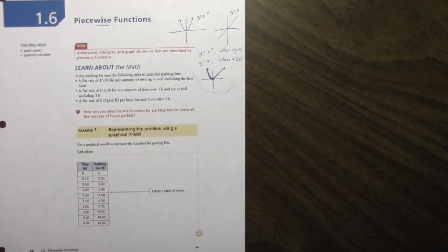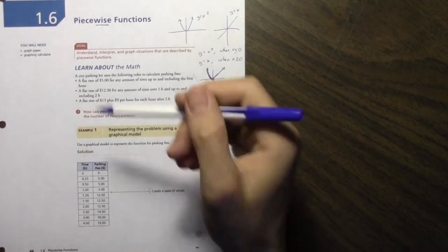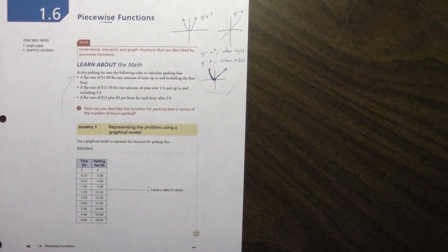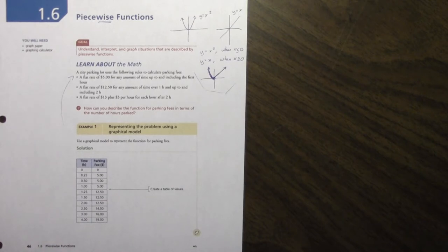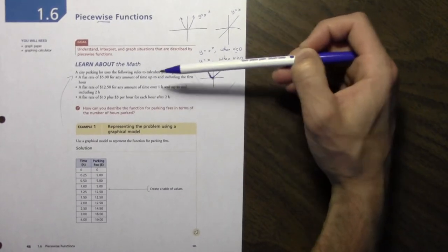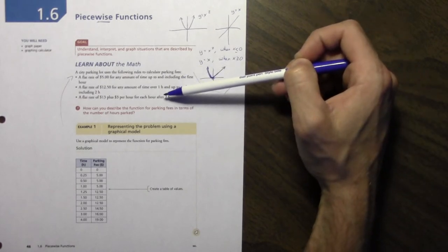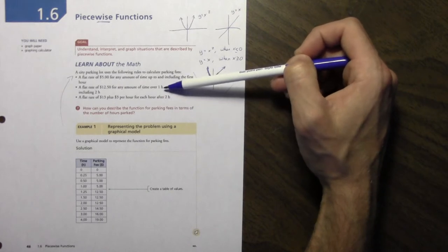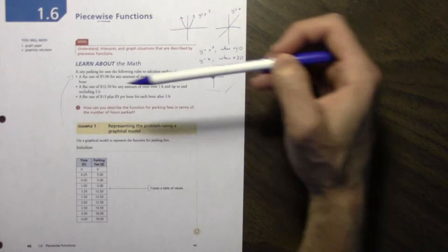The first example. Represented the problem using the graphical model. Actually, sorry, you got to go back up here. Learning about the math. A city parking lot uses the following rules to calculate parking fees: A flat rate of $5 for any amount of time up to and including the first hour. A flat rate of $12.50 for any amount of time over one hour and up to and including two hours. A flat rate of $13 plus $2 per hour for each hour after two hours. Good. So we can see here then, this is a function that involves three different restrictions on the domain. The domain of course being the X value, the independent value, which in this case is time.